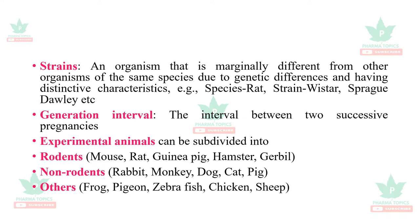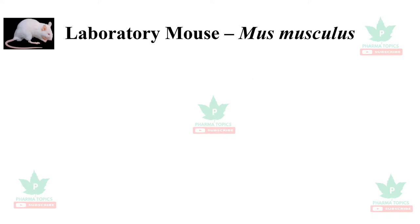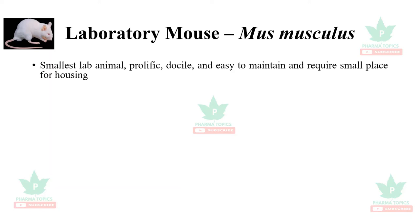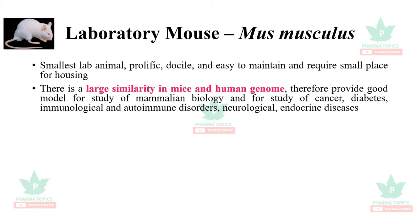The first laboratory animal is the mouse, Mus musculus. It is the smallest lab animal, prolific, docile, and easy to maintain, requiring only a small space for housing. There is a large similarity between the mouse and human genome, making it a good model for study of mammalian biology, cancer, diabetes, immunological and autoimmune disorders, and neurological and endocrine diseases.